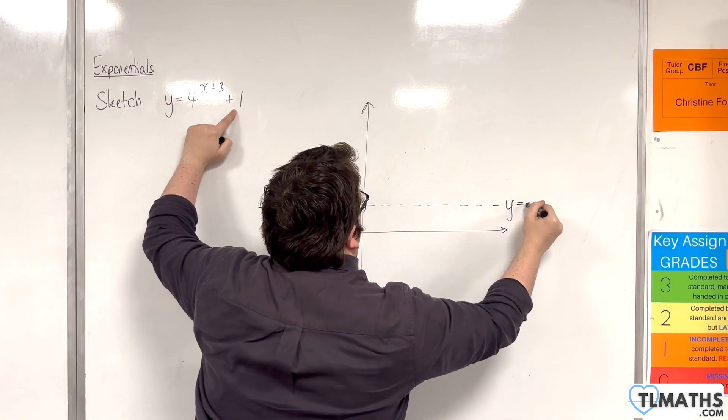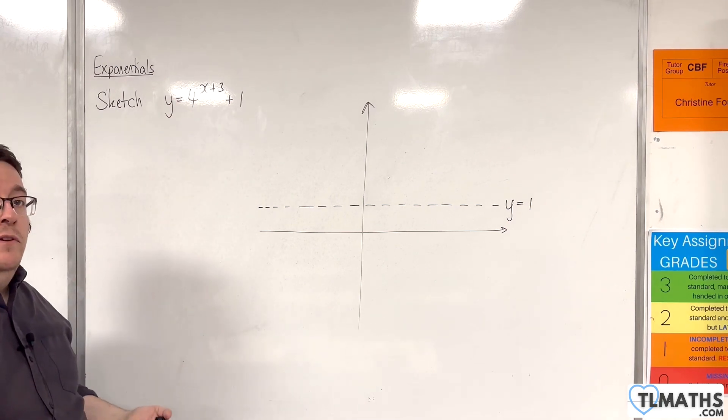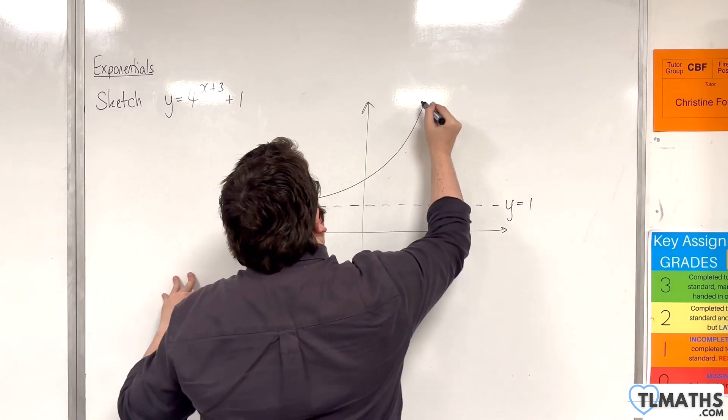Now the shape of the curve is what we're used to. This is 4 to the x, which has been translated 3 units to the left. So the curve will still look like this.